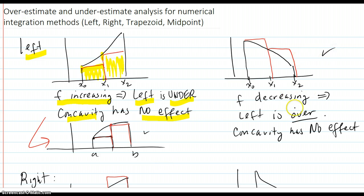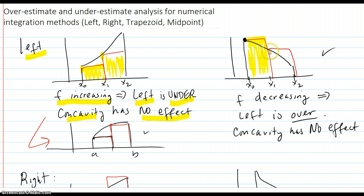Over here in this picture, F is decreasing. When you take the left rectangles, you can see that they are an overestimate. So if F is decreasing, the left rectangle sum method is an overestimate. Again, concavity has no effect.